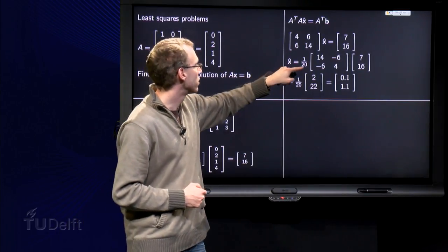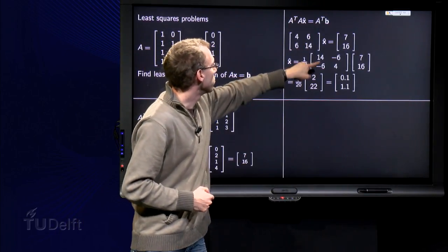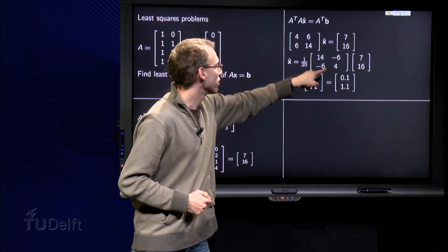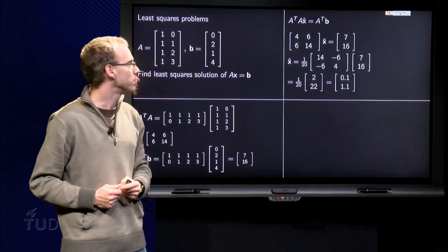So x hat equals: interchange those two, put minus signs over here, and divide by the determinant. A inverse times A transpose times b.